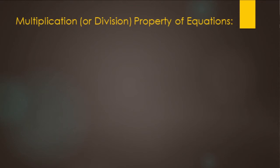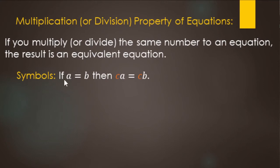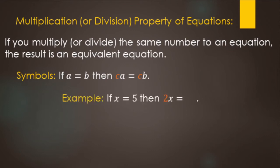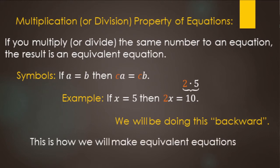That leads us to the multiplication or division property of equations. Similar to the addition-subtraction one, we can multiply or divide the same number on both sides of the equation. In symbols: if A equals B, we can multiply both sides by C. This also works for division — we can divide both sides by the same amount. For example, if x equals 5, then 2x equals 10. We're going to do this type of thing backwards to make equivalent equations — equations that have the same value for the variable.